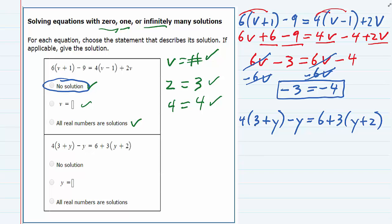And then we have a second equation here to solve as well. Same approach, I'm going to distribute to get rid of the parentheses. And when I do, four times three is 12, four times y is 4y, subtract that next y.